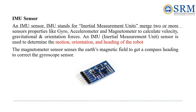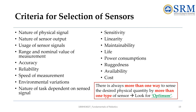An IMU (Inertial Measurement Unit) sensor combines different sensors like a gyroscope, accelerometer, and magnetometer to determine a robot's speed, orientation, and direction. The magnetometer acts like a compass, helping to correct the gyroscope's readings by sensing the Earth's magnetic field. This sensor is crucial for understanding how the robot is moving and where it is headed. Remember: there is always more than one way to sense a desired physical quantity, so we must select the optimum sensor.